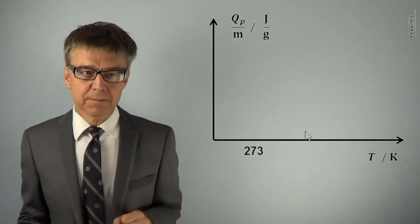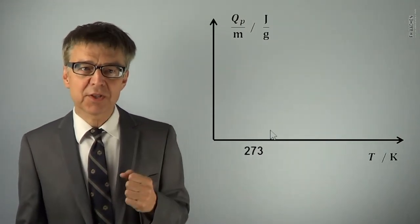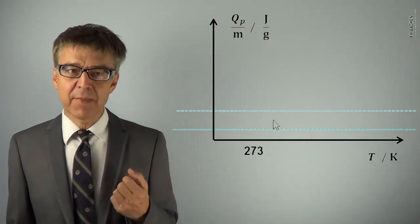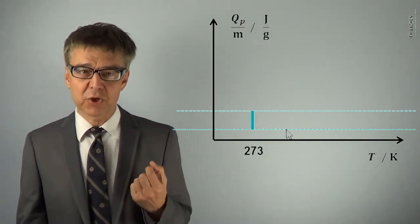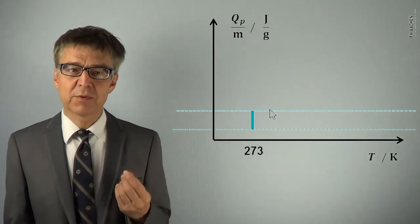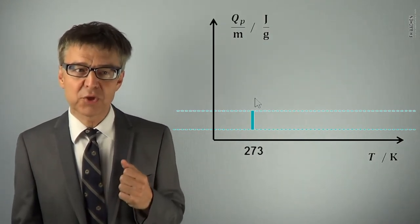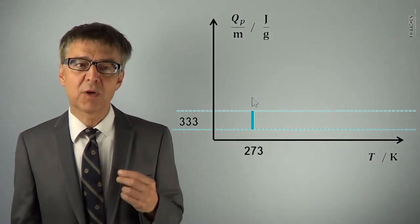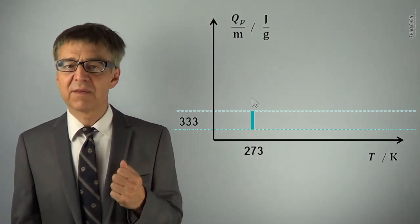If we add heat, the temperature will initially not change. The ice absorbs heat and melts at constant temperature. After having absorbed 333J of heat, the ice has completely melted to liquid water of 273K.